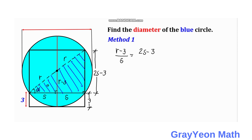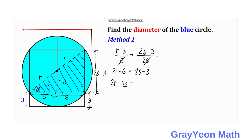From the larger triangle, the opposite is (2s minus 3) and the adjacent is 2s. Setting these ratios equal and cross-multiplying gives us 2r minus 6 equals 2s minus 3. Transposing terms, we get 2r minus 2s equals 3, and factoring out the 2 gives us r minus s equals 3 over 2.